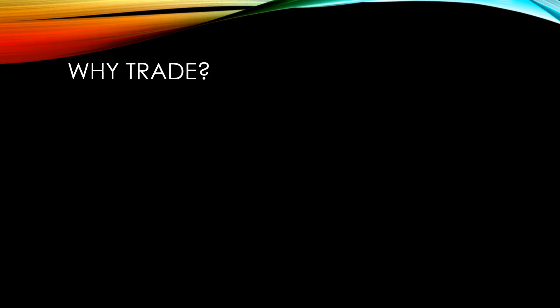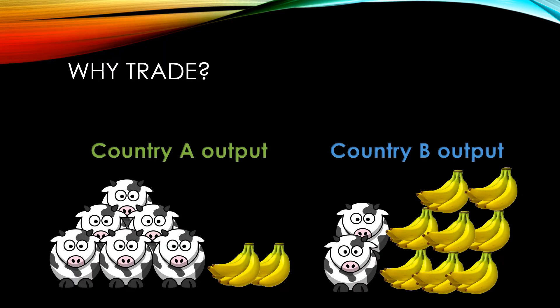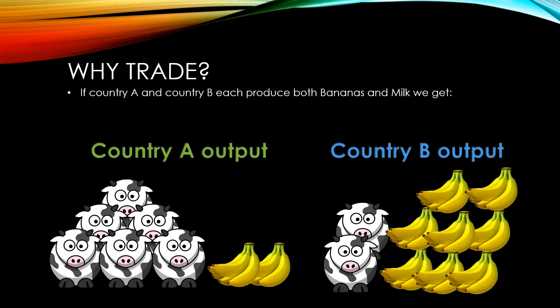To understand why countries trade, let's consider this very simplified example. Both country A and country B enjoy banana ice cream. Each of them devotes half of their resources towards producing bananas and half towards producing milk. In country A, they have a high amount of rainfall which favours milk production — they produce 6,000 litres of milk and 2 tonnes of bananas. In country B, they have a lot of sunshine and are able to produce 8 tonnes of bananas and 2,000 litres of milk. Together, these countries produce 8,000 litres of milk and 10 tonnes of bananas.